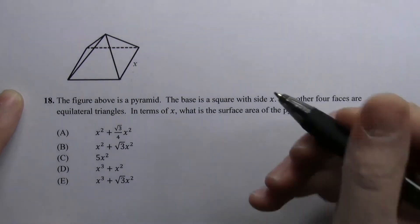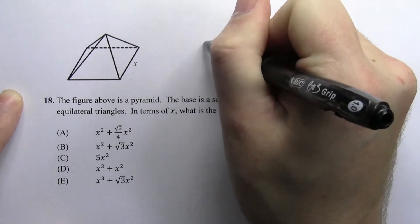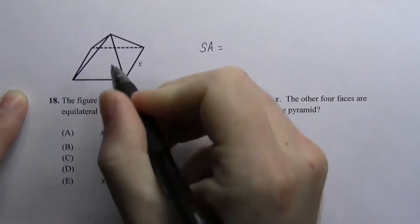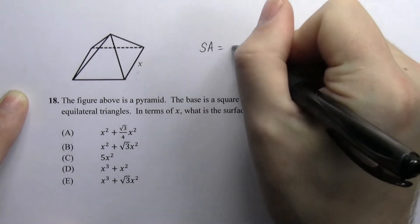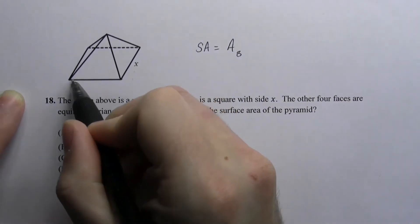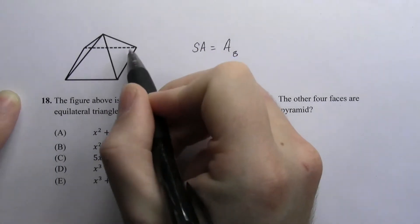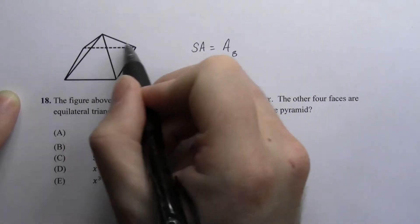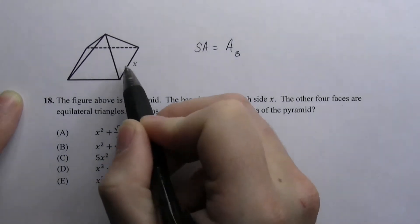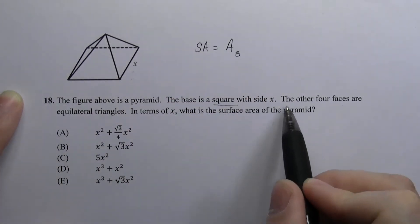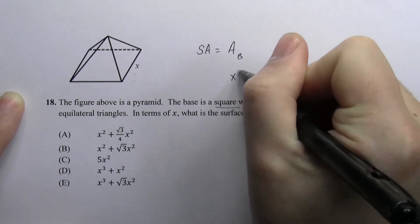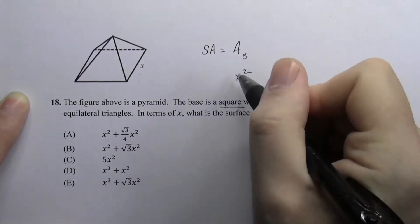We don't have a formula for the surface area of a pyramid, so we should probably think about how we're going to visualize that first. Clearly it's going to be the area of the base — let's call that area sub b. Then we have these four lateral sides. The base is a square, so the base area is just x squared, where x is the side length.